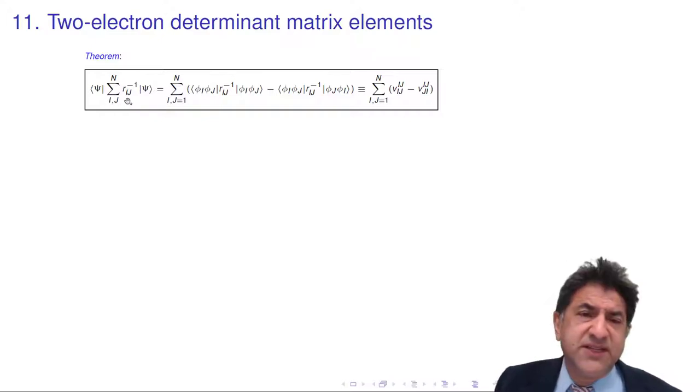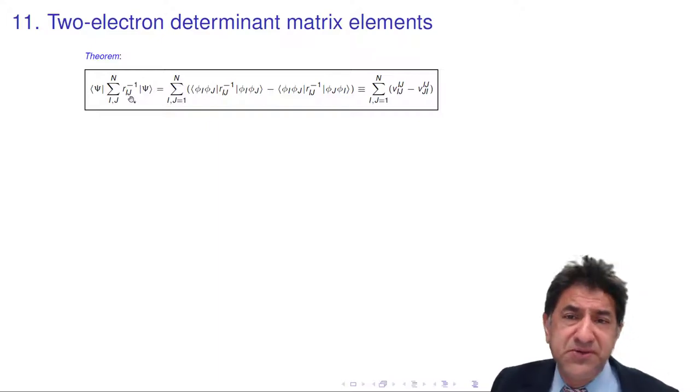Ij, we can't have I equals j because we shouldn't include the repulsion of an electron with itself. That would be infinite. And we really should have a factor of a half in here to avoid double counting, but I've got rid of that for the moment.